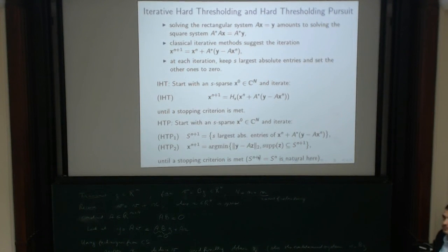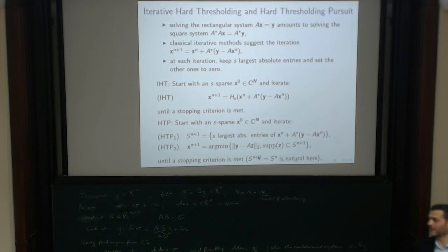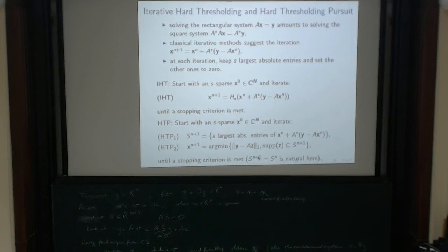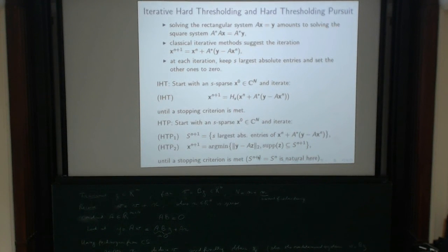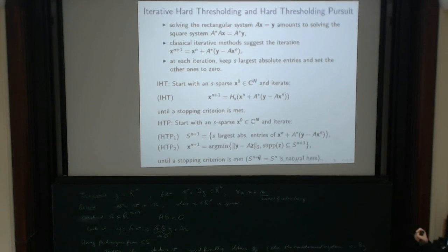That's it for today. What I've done is present a few things, but why would these algorithms work? Under what conditions on the matrix A? Tomorrow I will present conditions on A — good matrices for compressive sensing — and prove, for at least two of these algorithms, that they do indeed output the true S-sparse solution. Thank you for your attention.